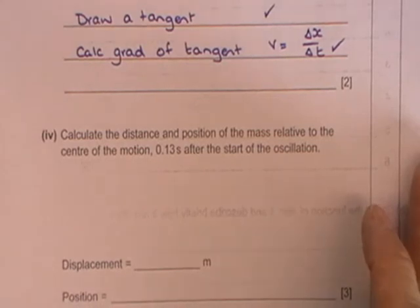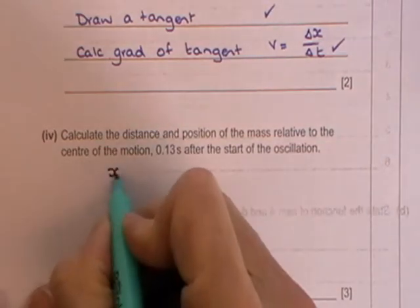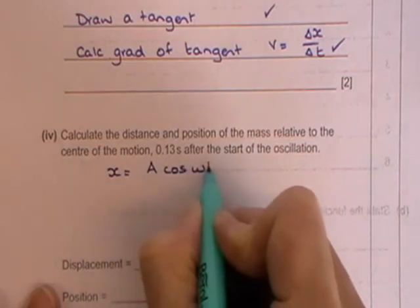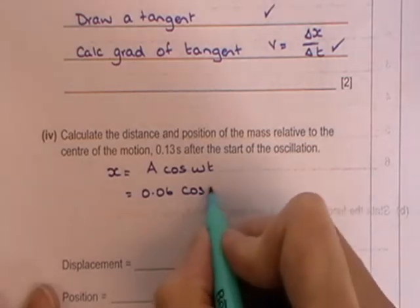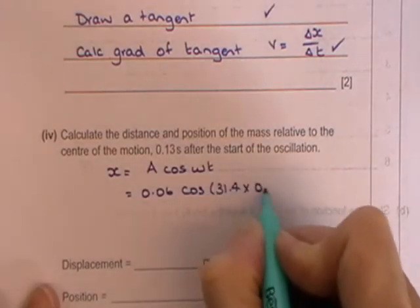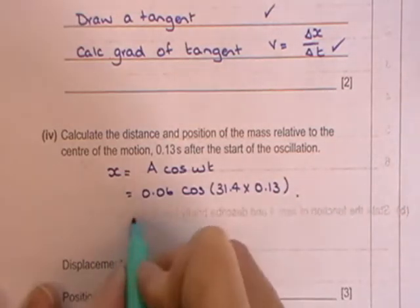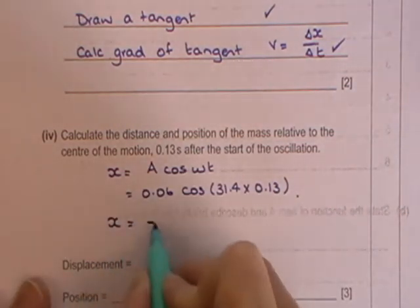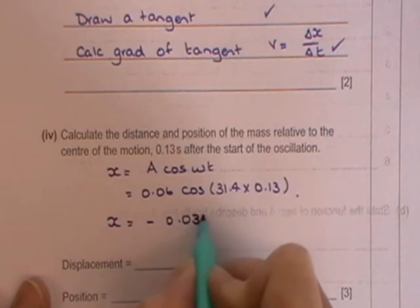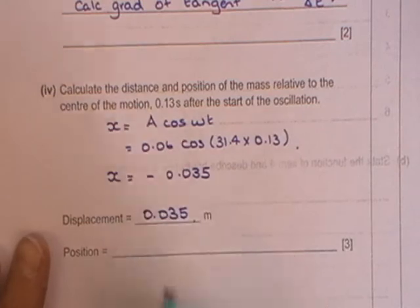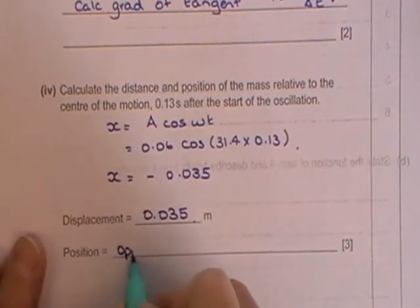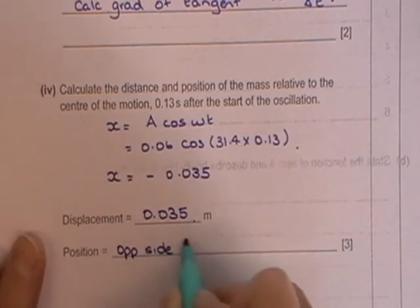Calculate the distance and position of the mass relative to the centre of motion 0.13 seconds after the start of the oscillation. And so we know our equation is x is equal to A cos omega t. And A is 0.06, omega we know is 10 pi or 31.4, and we're multiplying by 0.13. And that, you have to have your calculator in radians, it gives you a minus number, 0.035. And therefore the displacement is 0.035, and its position is in the opposite side from its starting position.